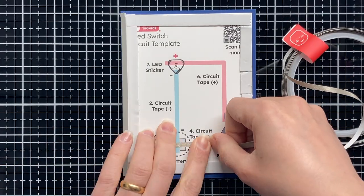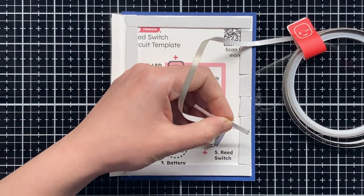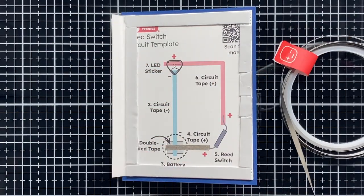Now let's build our circuit, and for that I am using conductive fabric tape, reed switch, and a yellow LED sticker.